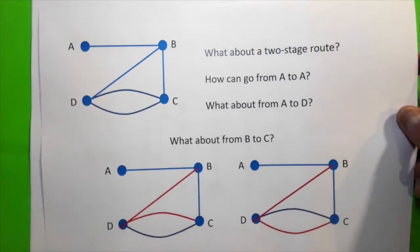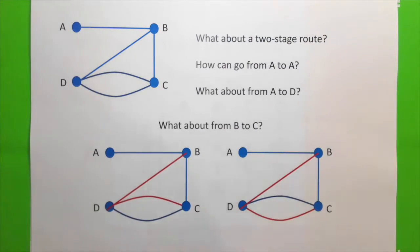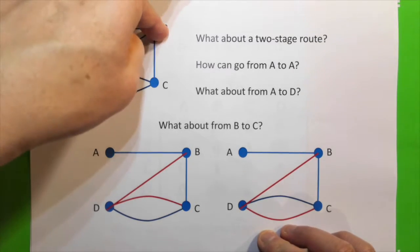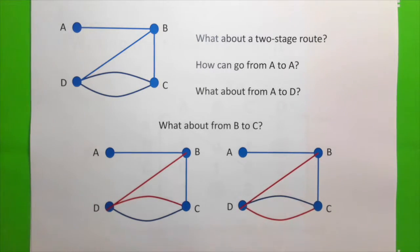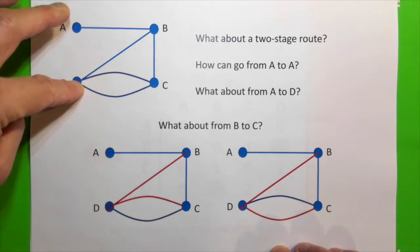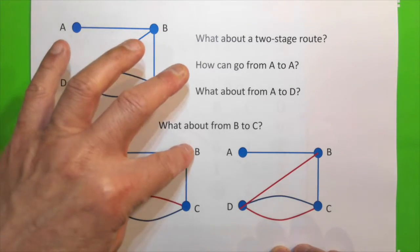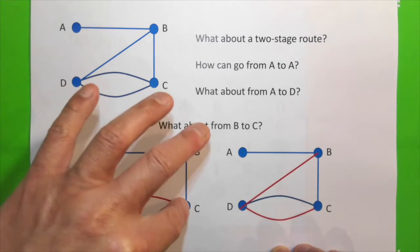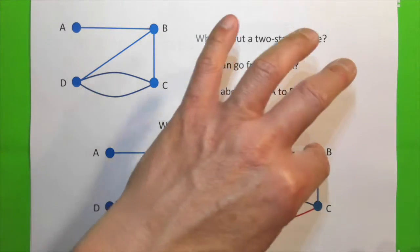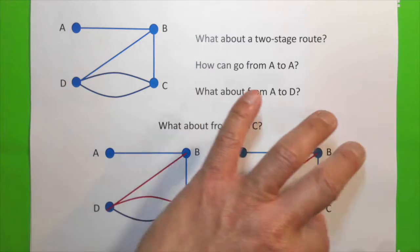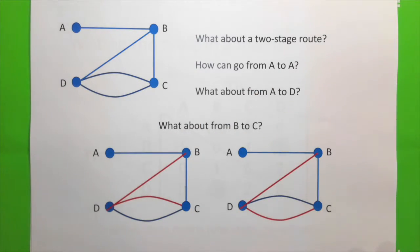Now, what about a two-stage route? Can we go from A to A? In this case, a two-stage is possible. We go from A to B and then back to A. What about A to D? Two-stage: A to B and B to D. What about from B to C? B to D and to C, or B to D and this route to C.